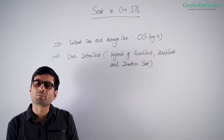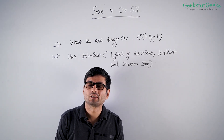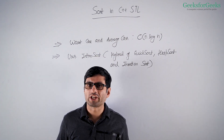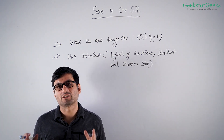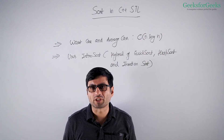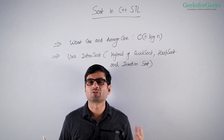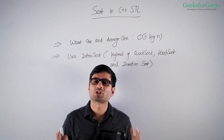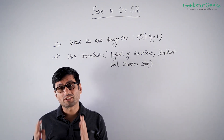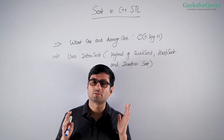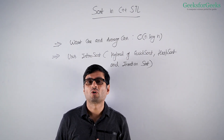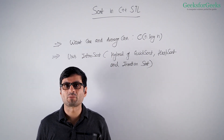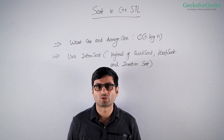Let's talk about time complexity and the internal working of the sort function. Sort internally uses a hybrid of quicksort, heapsort, and insertion sort — known as introsort. By default it uses quicksort, but if quicksort is doing unfair partitioning and would take more than O(n log n) time, it switches to heapsort. When the array size becomes very small, it switches to insertion sort. The worst case and average case performance of sort is O(n log n), which is optimal for any general purpose sorting function.